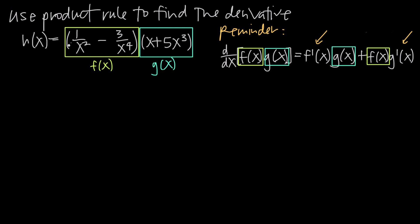We have the product of two functions and we want to take the derivative of h. To do that, we need to find f' and g'. The first thing we should do is take the first function f and change it so that we don't have fractions — it'll make it simpler to find the derivative.